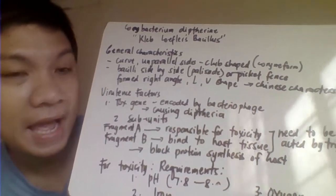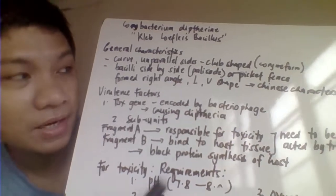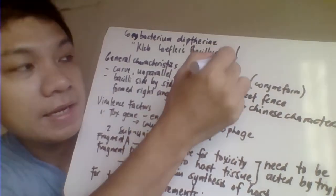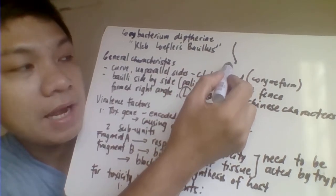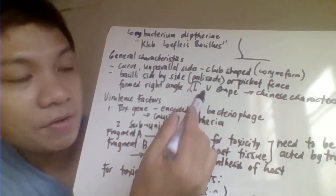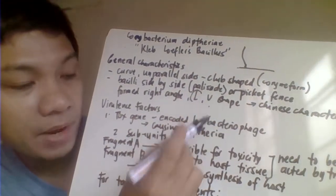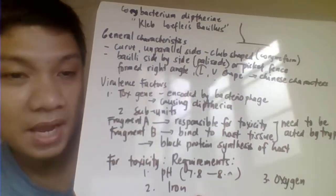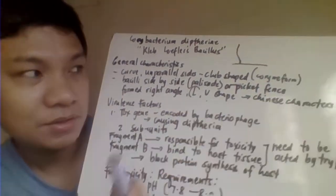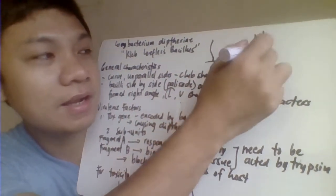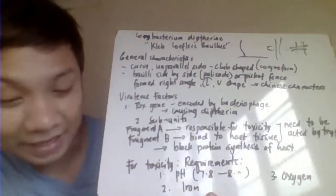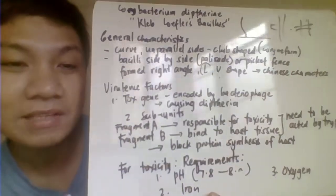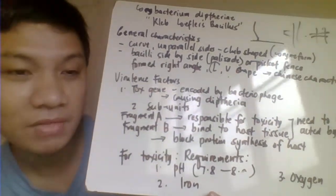The bacilli can lie at angles to one another. Other bacilli may lie end to end, giving you an L or even a V arrangement, which sometimes gives the characteristic Chinese letter arrangement.